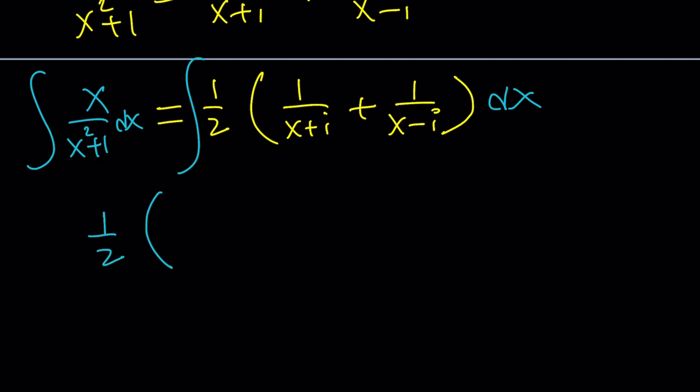1 half, you can take it all the way out. Now, the integral of 1 over x plus i is ln, like think about 1 over x, it's ln x, but this is just ln x plus i, plus ln x minus i. I'm ignoring the absolute value here, forgive me for that, plus c. Awesome.